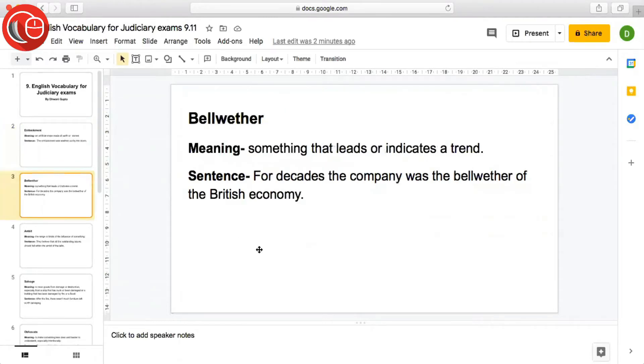The next word is bellwether, meaning something that leads or indicates a trend. Koi cheez jo ki lead karti hai ya trend batati hai jo latest trend chal raha hai that is bellwether. Sentence: For decades the company was the bellwether of the British economy. So for decades the company indicated the trend of the British economy.